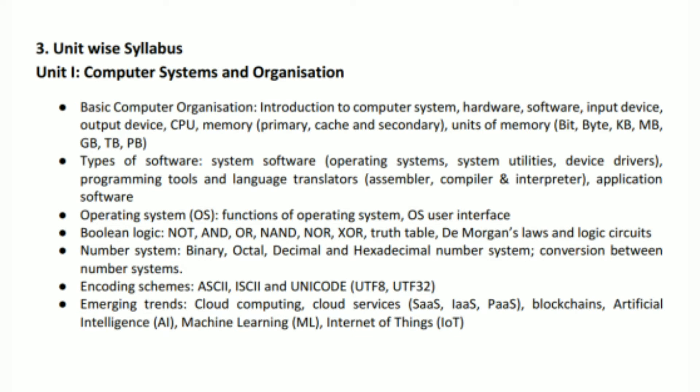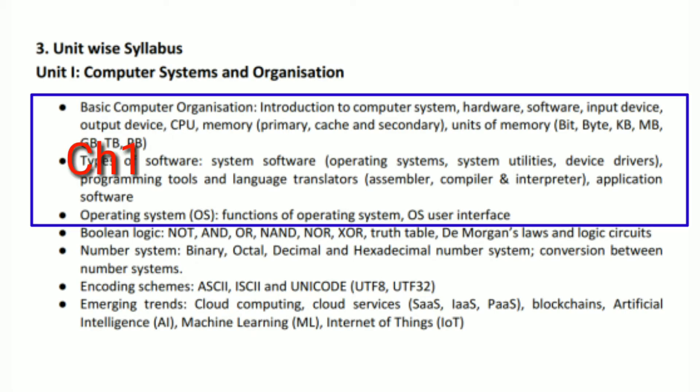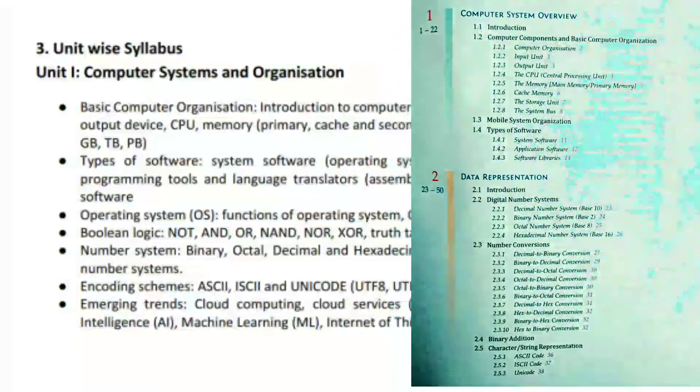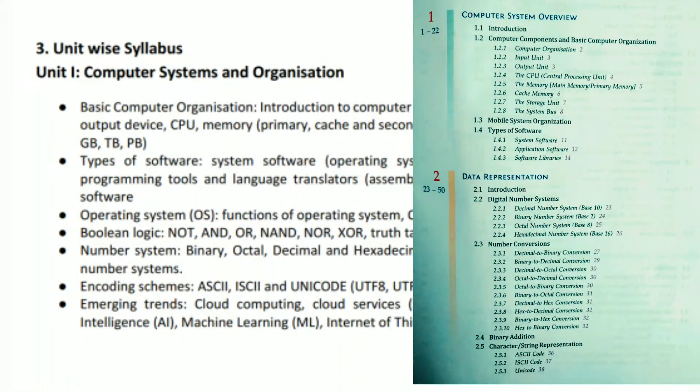Let's start. The very first one, Unit 1. You can see a number of points are mentioned. Point number 1, point number 2, as well as point number 3—these all are of chapter number 1: basics, types of software, and operating system. These all are of chapter number 1. Let me show you where this is available. Let me open the book of Sumita Arora. You can see this is the very first chapter, Computer System Overview, which will take point number 1, point number 2, and point number 3.